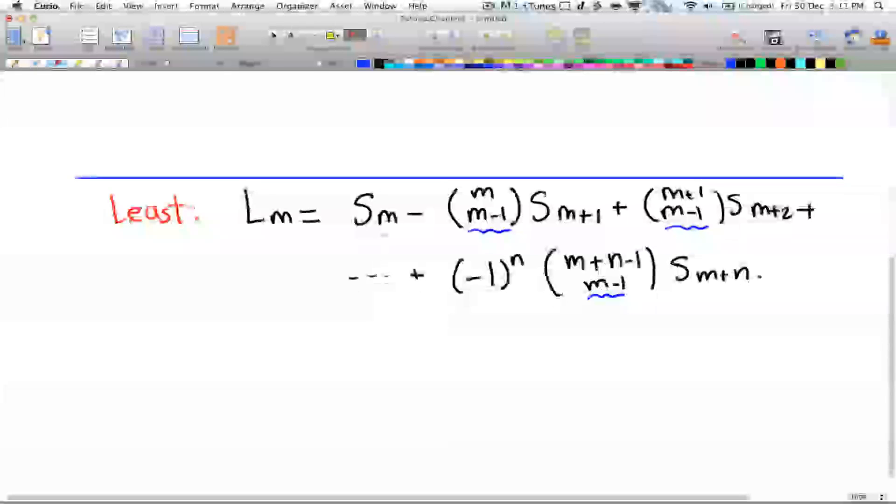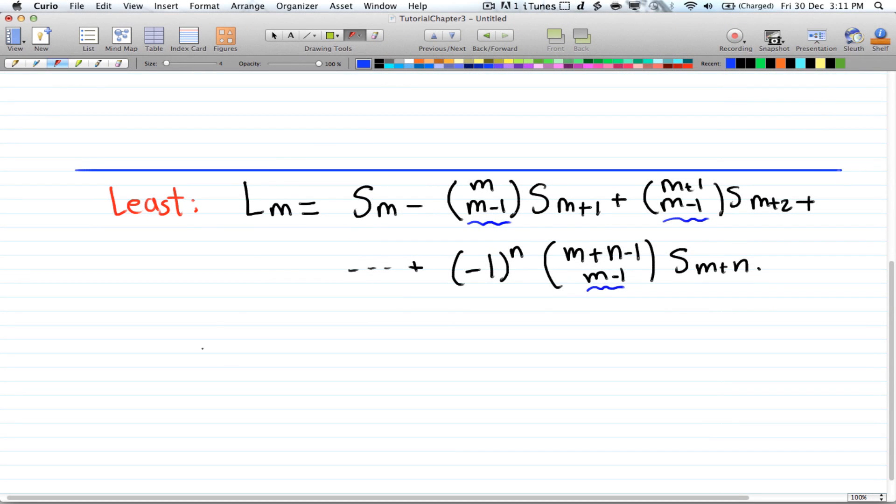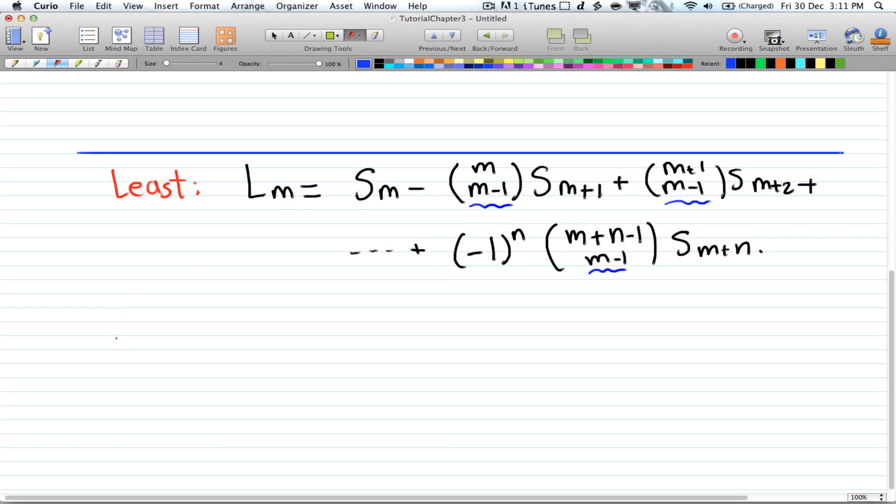And just like the last case, if m equals 2 and n equals 4, you just place the numbers in here. So let's have m equals 2 and n equals 4.